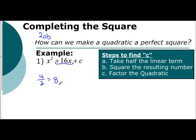Square the resulting number. And so we have 8 squared. And that is 64. And so I have x squared plus 16x. The c value that I'm finding is plus 64.